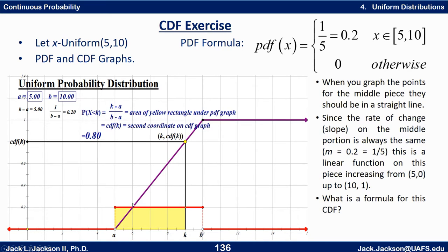What makes it straight is the fact that every time we go to the right one unit, we're picking up the same amount. I've got grid lines marked off in ones, so each little rectangle here is 0.2 or one-fifth. Go right one, go up one-fifth. Go right one more, up another fifth — and so on until the last fifth puts us at one. The y-value on the CDF is the same as the cumulative area to the left under the PDF.